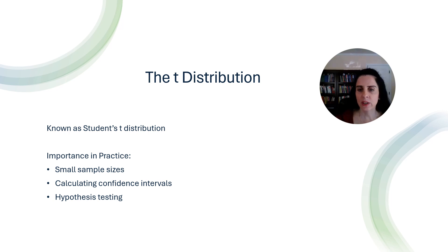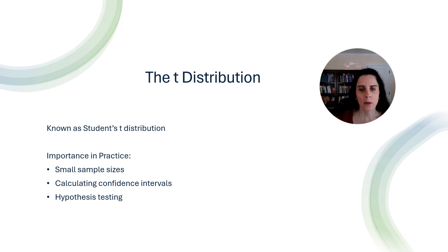The T-distribution is vital for constructing confidence intervals around sample means when the population standard deviation is unknown. For example, in educational research, one might want to know the average test scores of a small group of students. The T-distribution provides a more accurate interval estimate that reflects the additional uncertainty inherent to smaller samples.